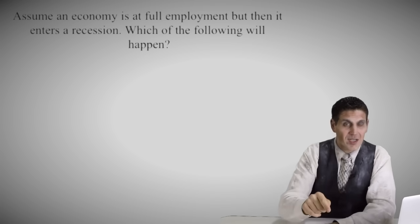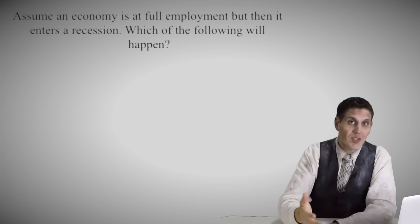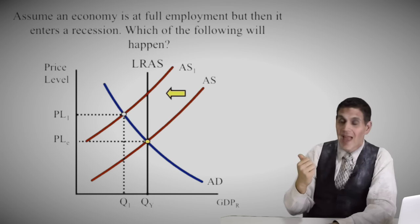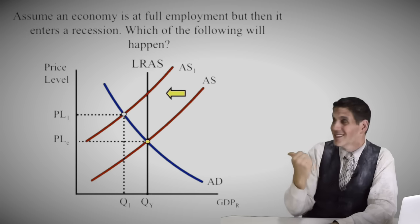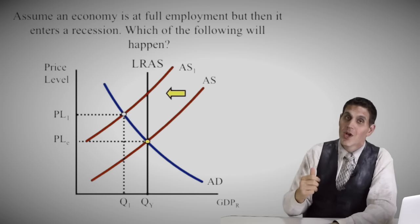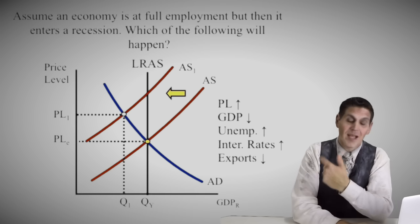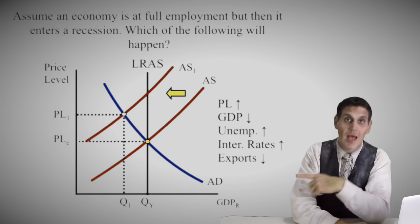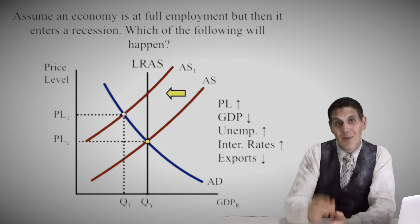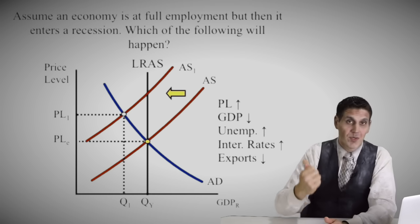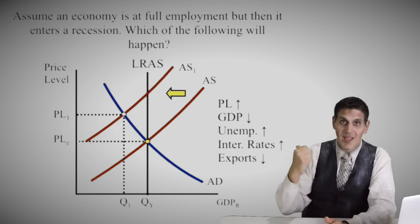But what if it wasn't aggregate demand? What if it was an increase in the price of oil or another key resource that shifted aggregate supply to the left, causing another recessionary gap — but this is stagflation — where price level went up. So aggregate supply shifted left, we're still in a recession, except in this case price level goes up, GDP goes down, and unemployment definitely goes up. Since price level goes up, interest rates would go up, and other countries would want to buy less of our stuff because our price level increased.